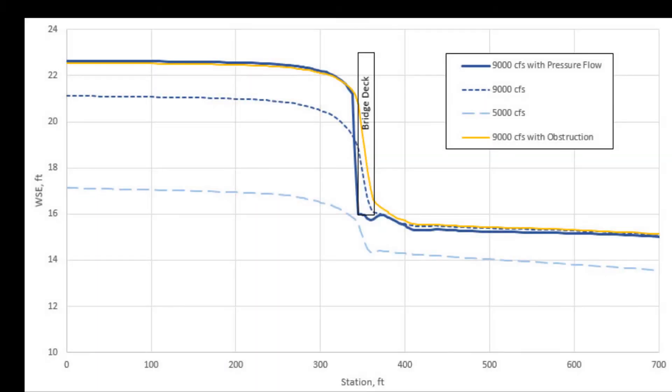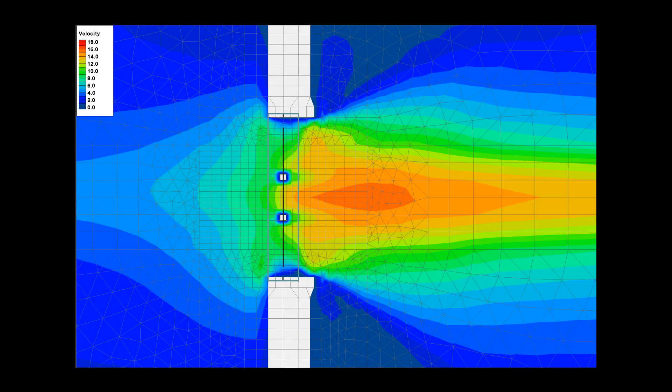When using an obstruction to represent the bridge deck, backwater due to the hydraulic impacts of the deck will be accounted for, but the velocities in the vicinity of the bridge deck will be reduced due to the increased roughness.